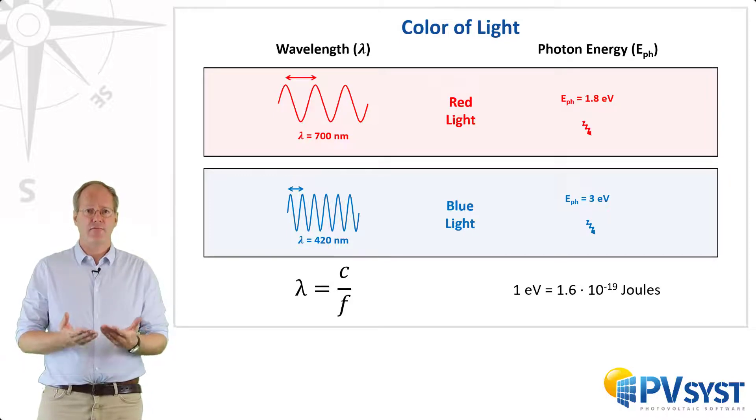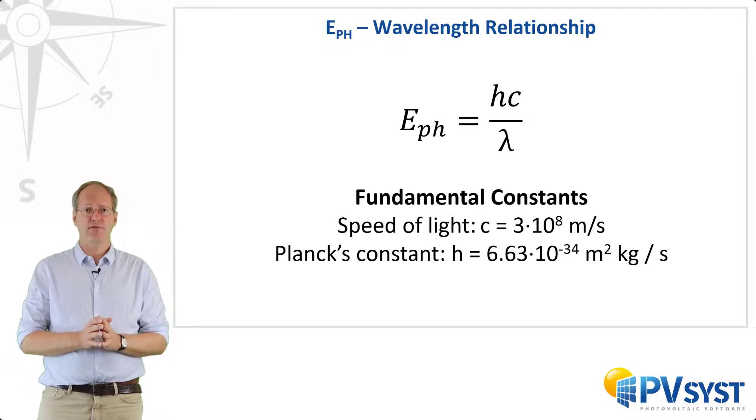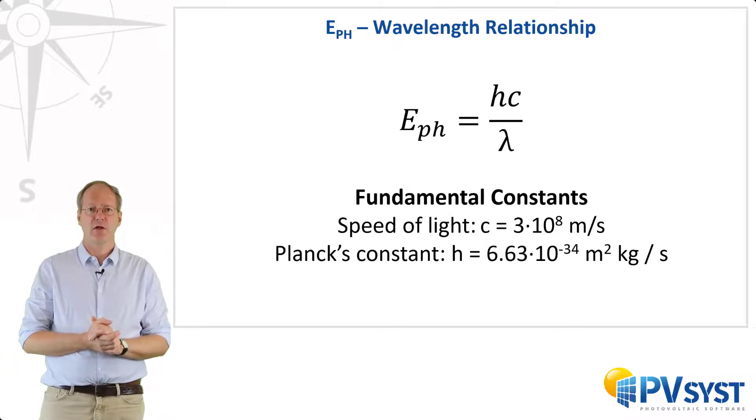So if wavelength and photon energy can both describe the color of light, how are these two quantities related? This fundamental equation shows this relationship. C and H are both constants, where C is the speed of light, and H is Planck's constant. So the energy of one photon is Planck's constant times the speed of light divided by the wavelength. Photon energy is inversely proportional to the wavelength. Light with shorter wavelengths describe lights whose photons have a larger photon energy.